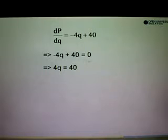So from here shift the 40 over the other side. So we have negative 4q equals to negative 40. Or we can write as 4q equals to 40. So from here q is equals to 40 divided by 4 which is equals to 10.